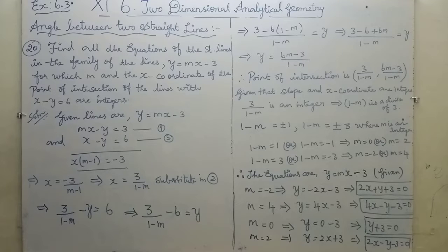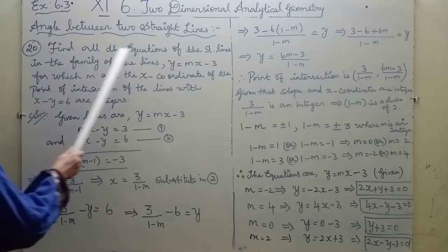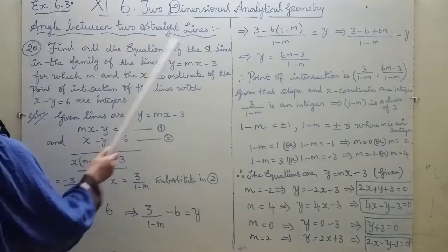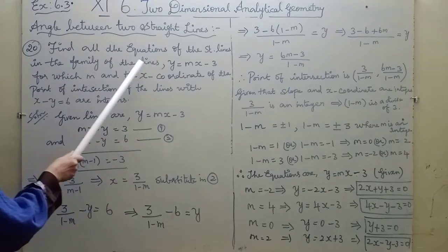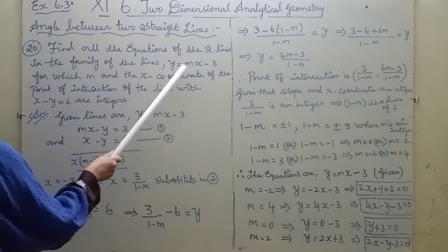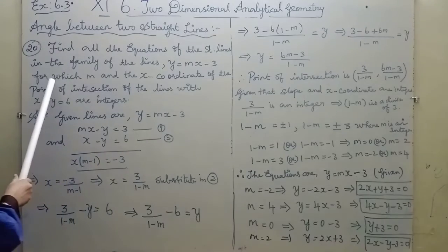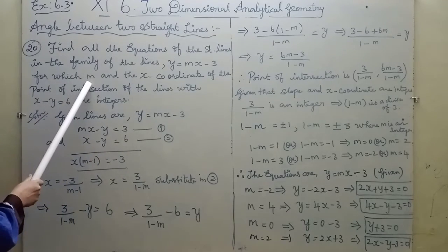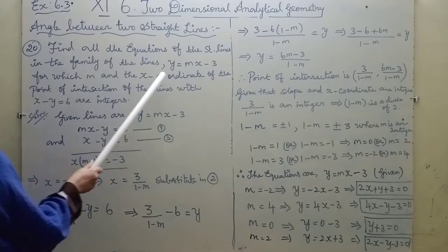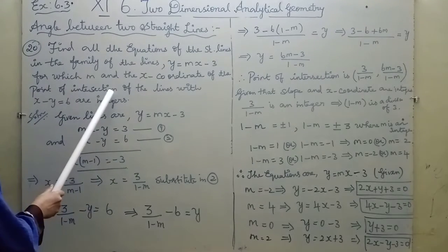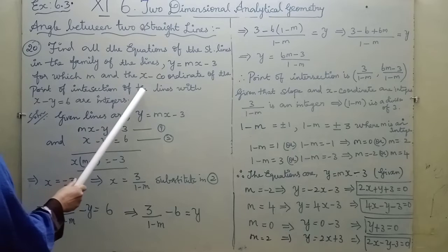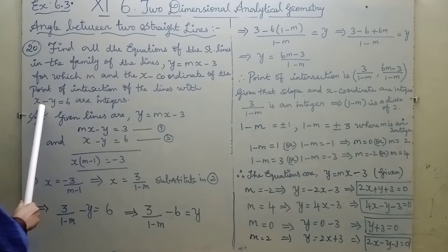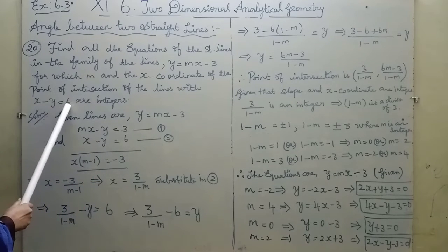We have started chapter 6. This is exercise 6.3, problem 20. Find all equations of the straight lines in the family of lines y = mx - 3, for which m and the x-coordinates of the point of intersection of the lines with x - y = 6 are integers.